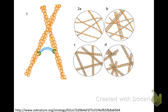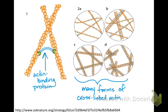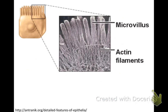Microfilaments can also use actin binding proteins to crosslink and form a meshwork of fibers right inside the cell membrane to support its shape. You can see all the various shapes that could be created by linking actin fibers together with these actin binding proteins. This also happens in microvilli — structures in the intestines that increase the surface area and absorptive area of intestinal lining cells. The actin fibers go up into the microvilli, pushing out and supporting the cell membrane as the contents of digestion move through.